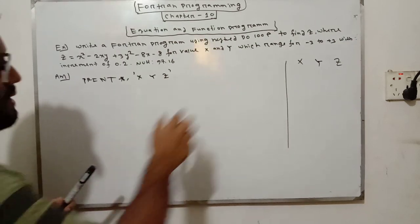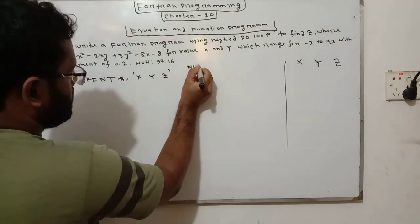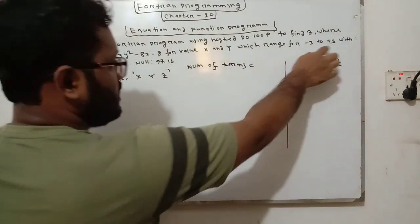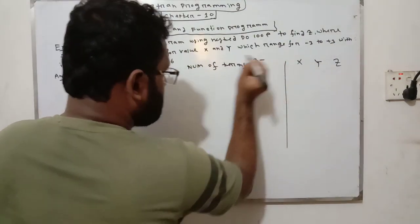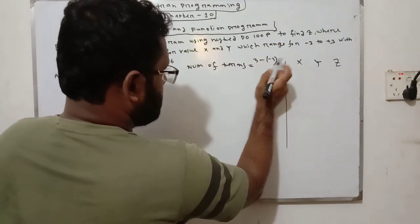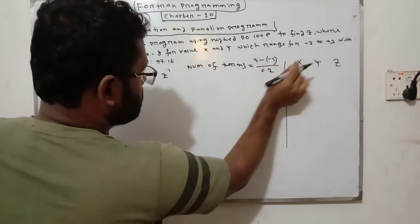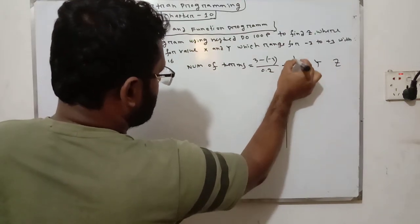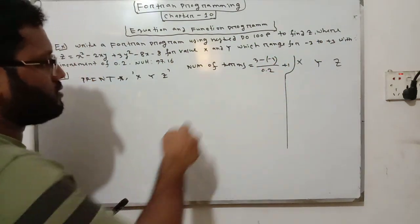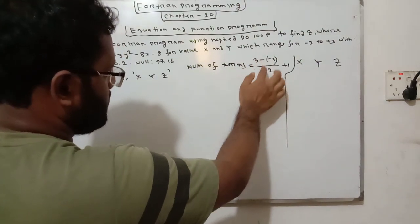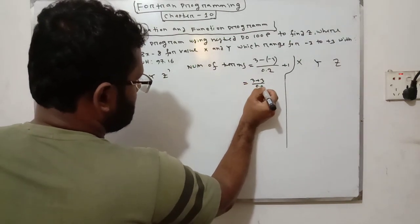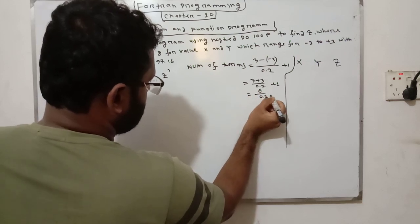This is the number of steps. Upper bound of the range: 3. Minus the lower bound: minus 3. Divide by the increment 0.2, plus 1. The number is: 3 plus 3 divided by 0.2, plus 1 — that is 6 by 0.2, plus 1.